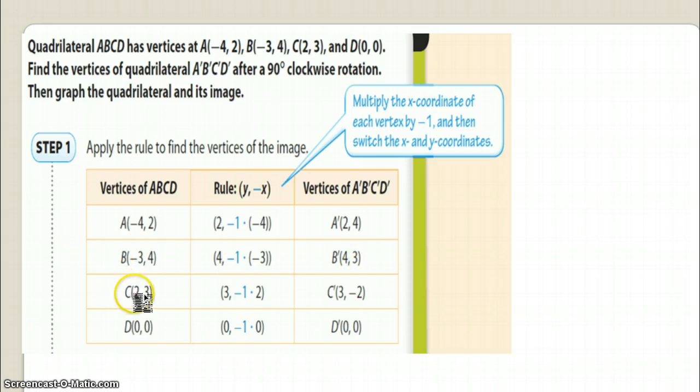Well C is two comma three, so multiply the x value which is two by negative one, it becomes a negative two, and then it changes places with y. So three becomes x, x becomes y, and you wind up with three comma negative two. Then of course zero times anything is zero, so our order pairs stay at zero, zero.